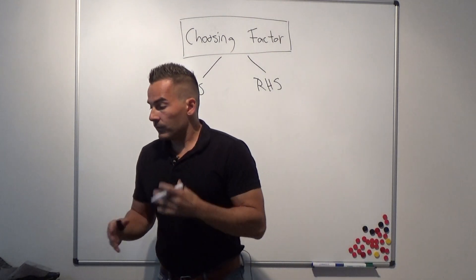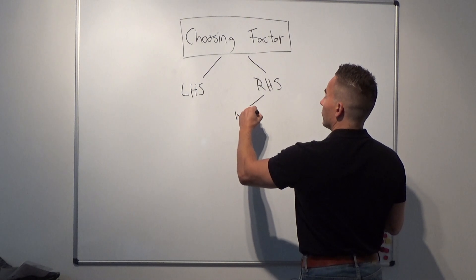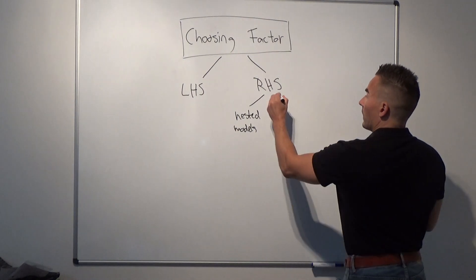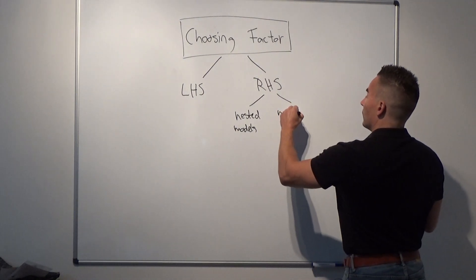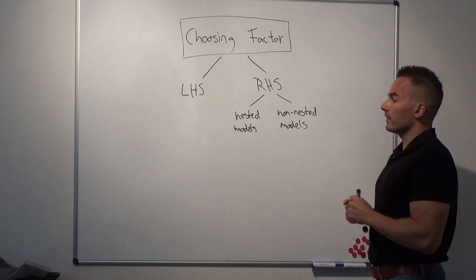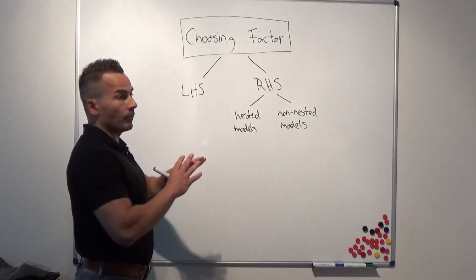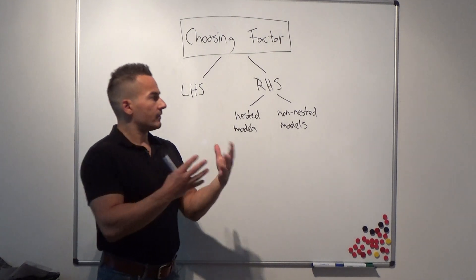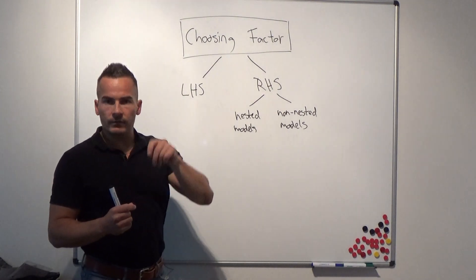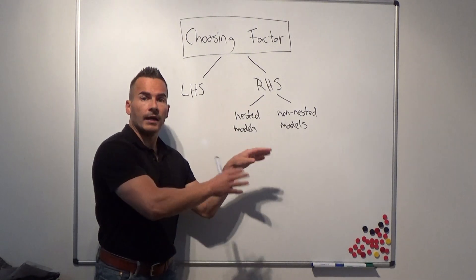We can break it down further into nested models and non-nested models. The left-hand side approach tests an asset pricing model using different test assets sorted by certain characteristics. Most papers use portfolios rather than individual stocks because portfolios are less noisy.